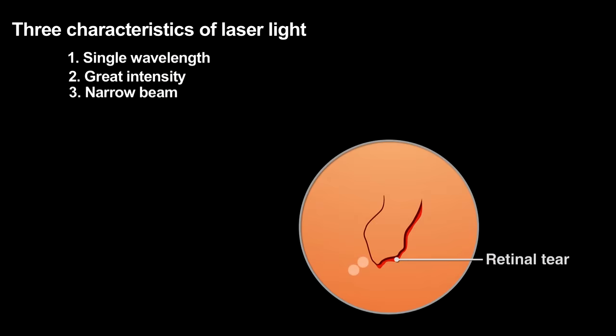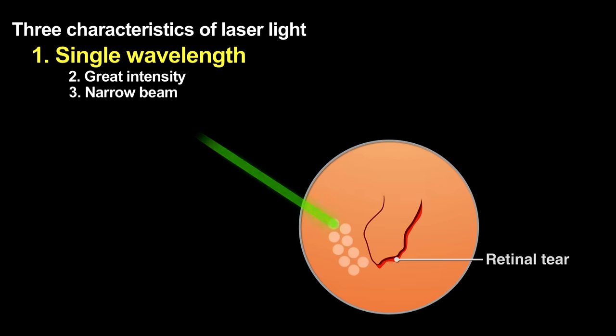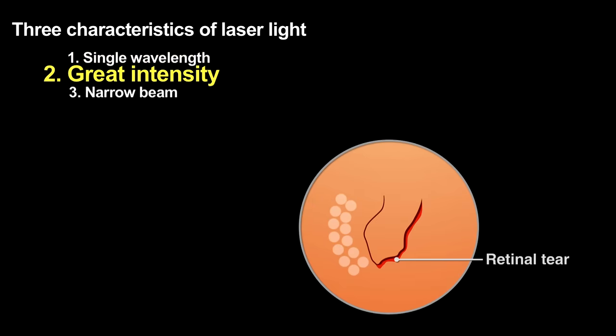Surgeons use green laser light of nearly a single wavelength because that color passes through the eye's lens and vitreous humor without being strongly absorbed and thus without causing damage. The laser beam then strikes the retina where the tissue strongly absorbs that light, using the high-intensity light to weld the detached retina back into place.